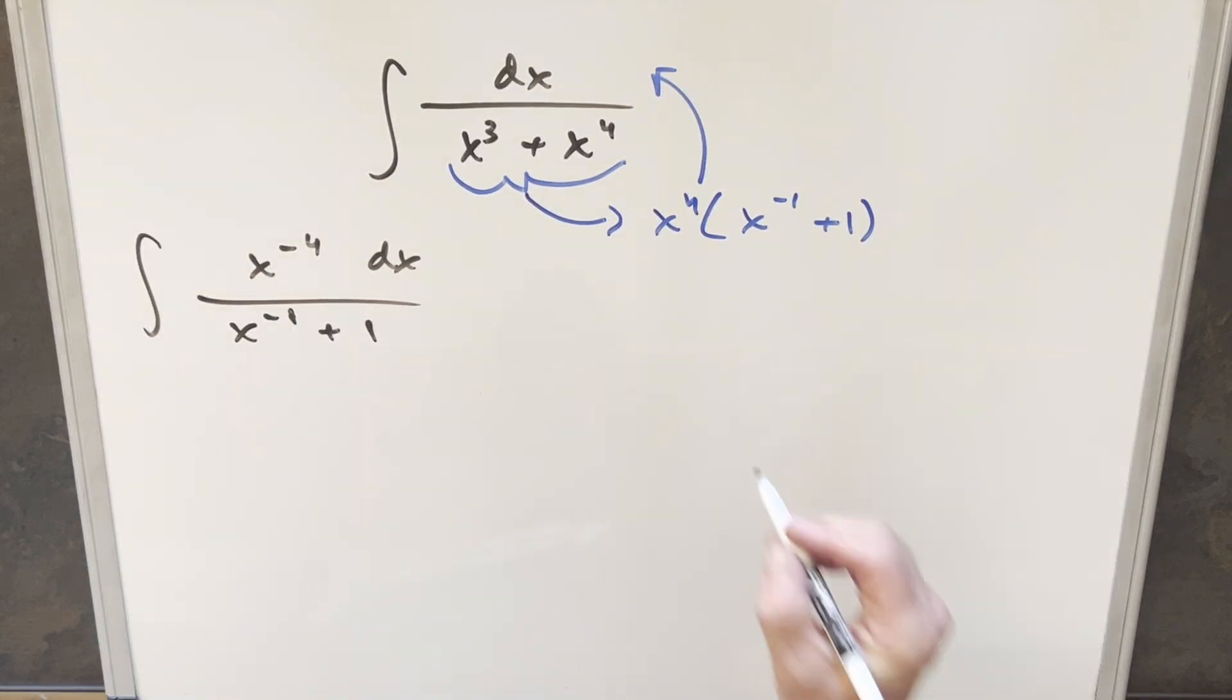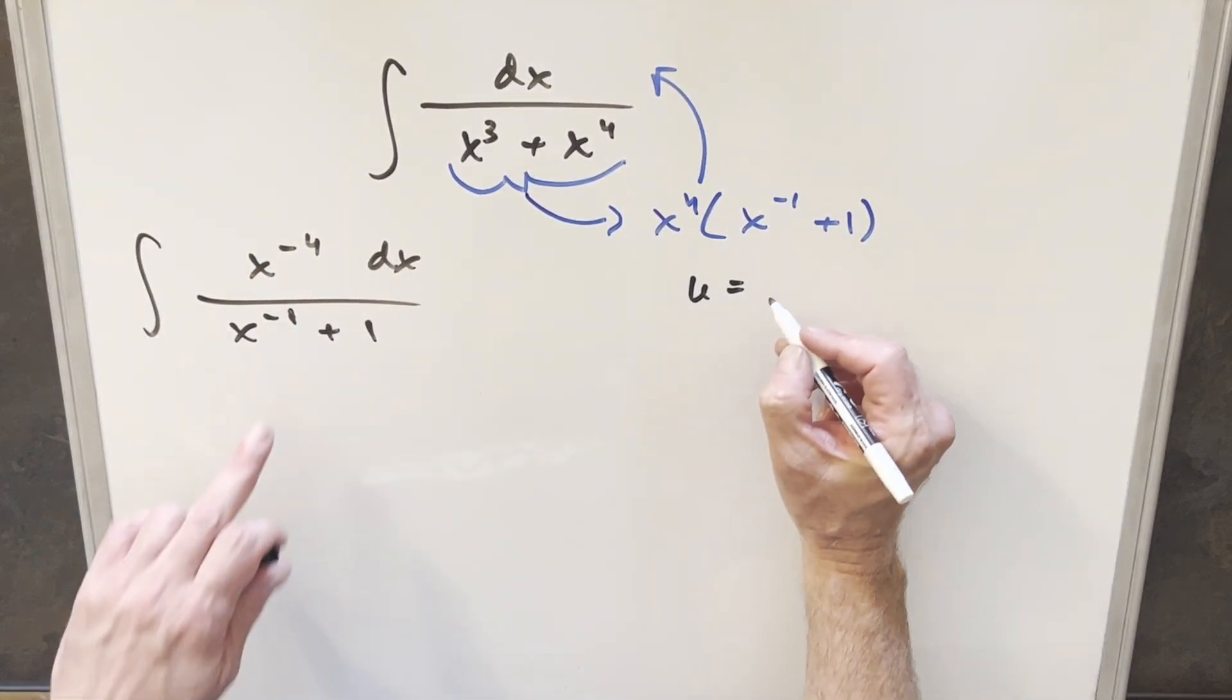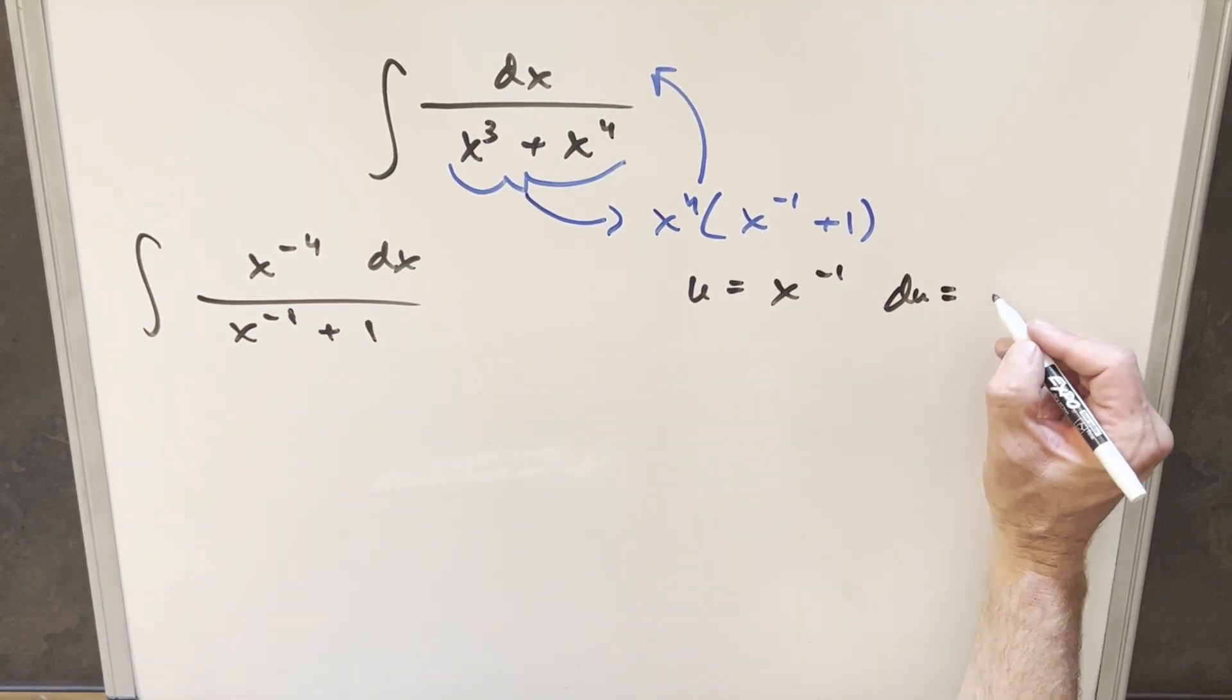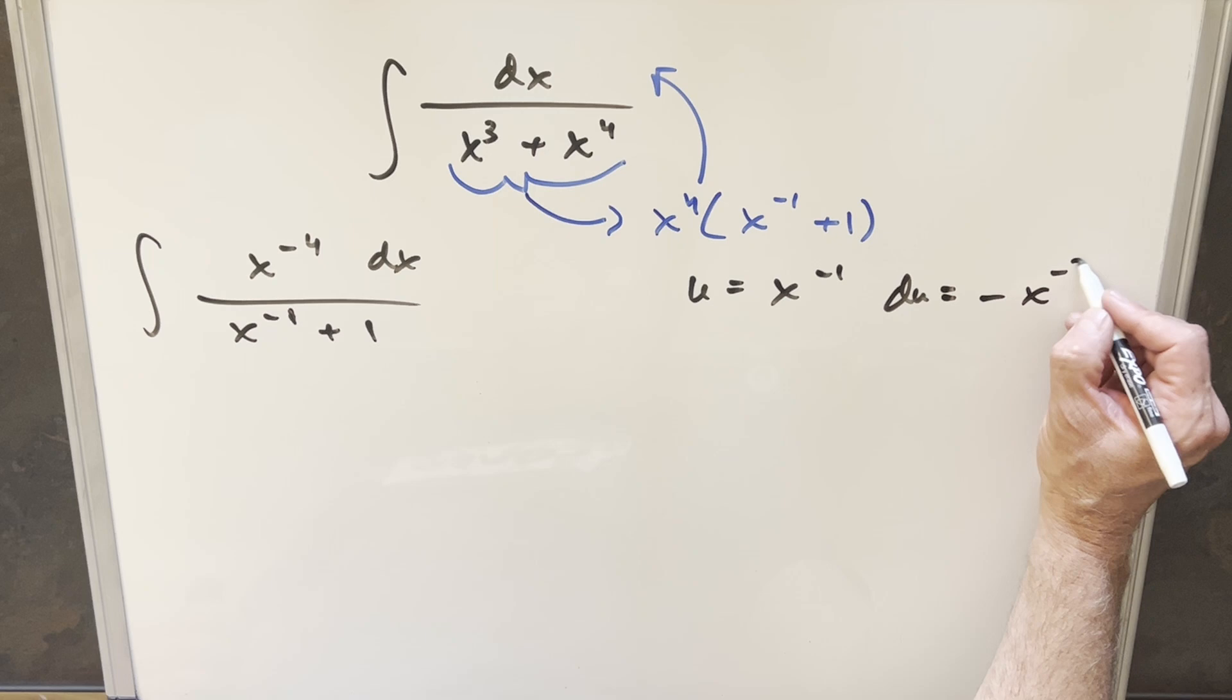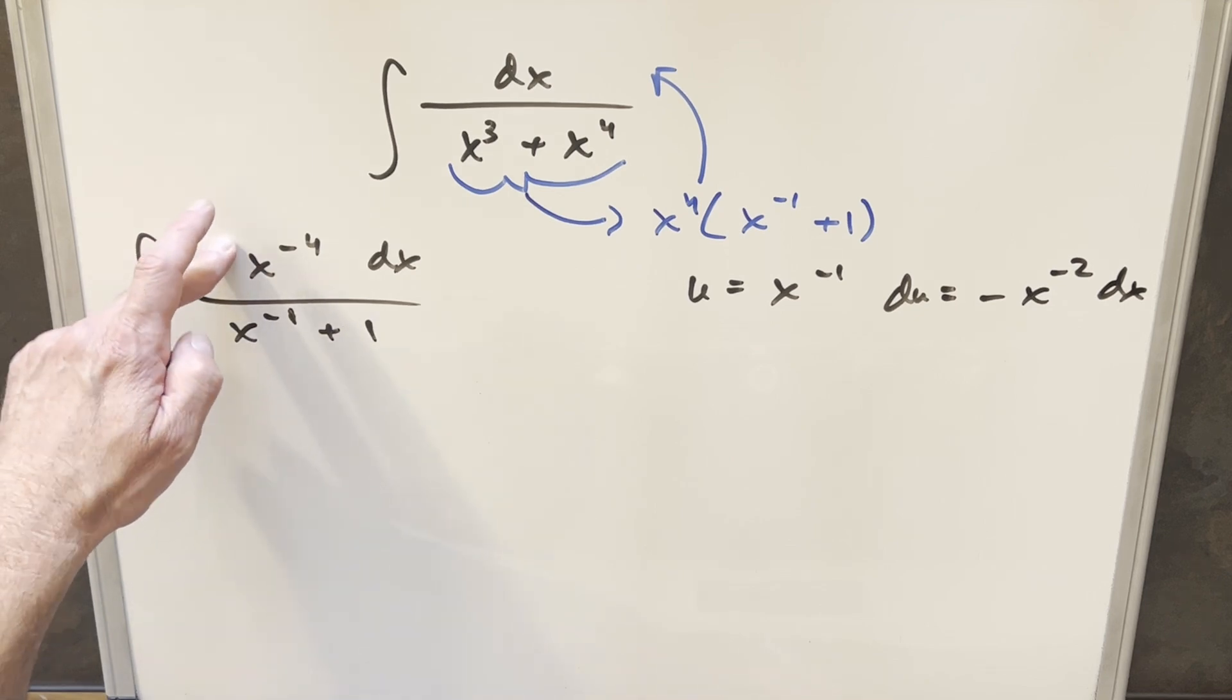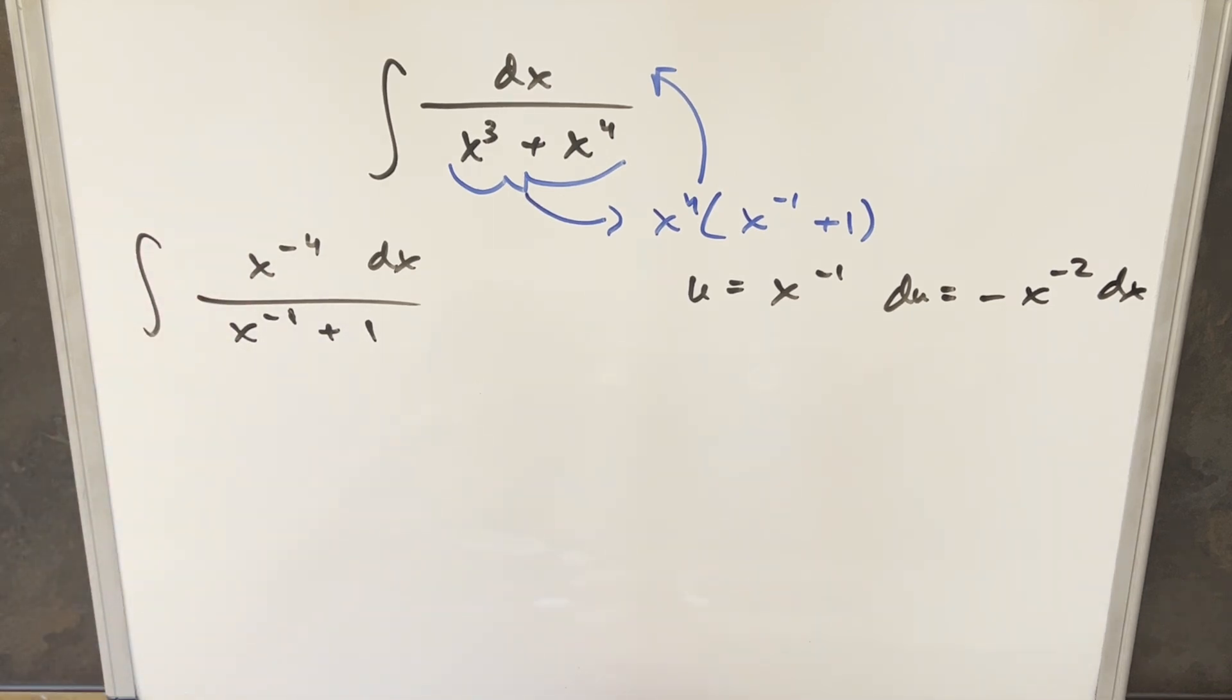So next we'll do the u substitution. I'll set my u equal to just x minus 1. Take a derivative on this. Using power rule, we'll get minus x minus 2 dx. Now what I'd like to happen is I want the numerator to have the du, but it's not quite right because we've got x to the minus 4. Here's x to the minus 2.